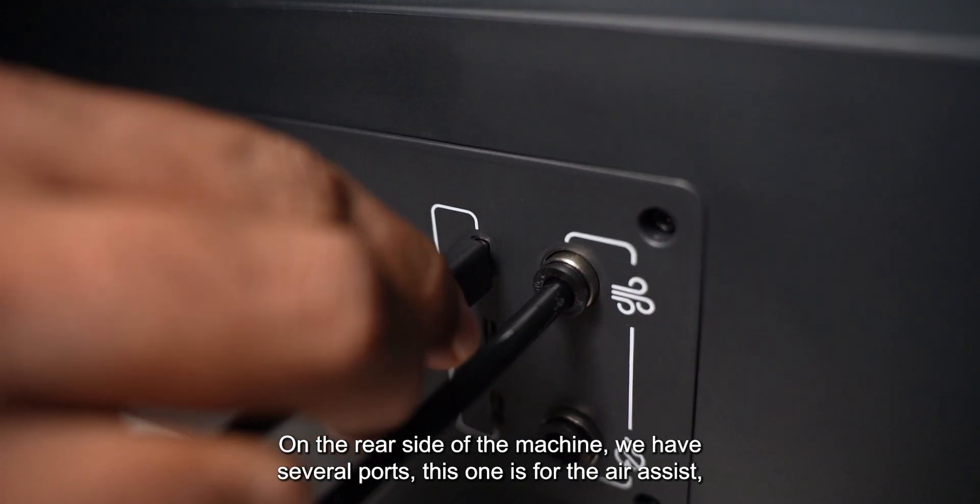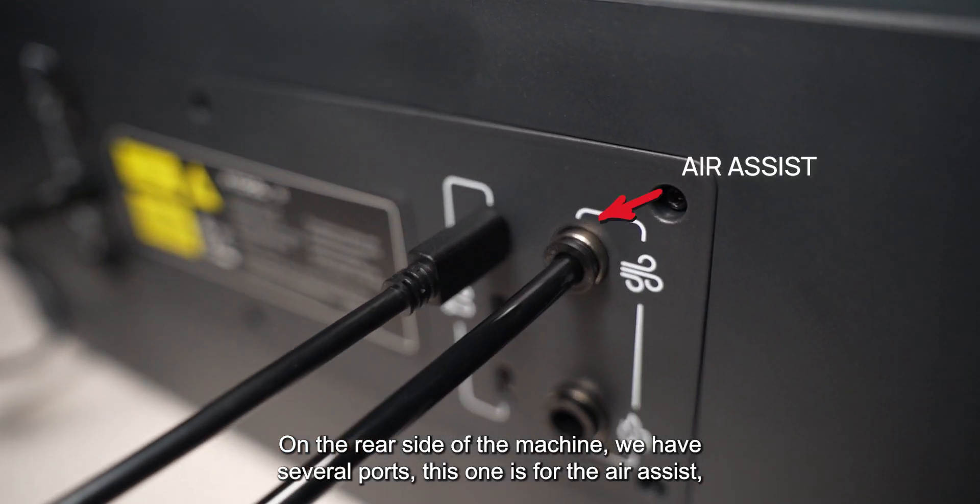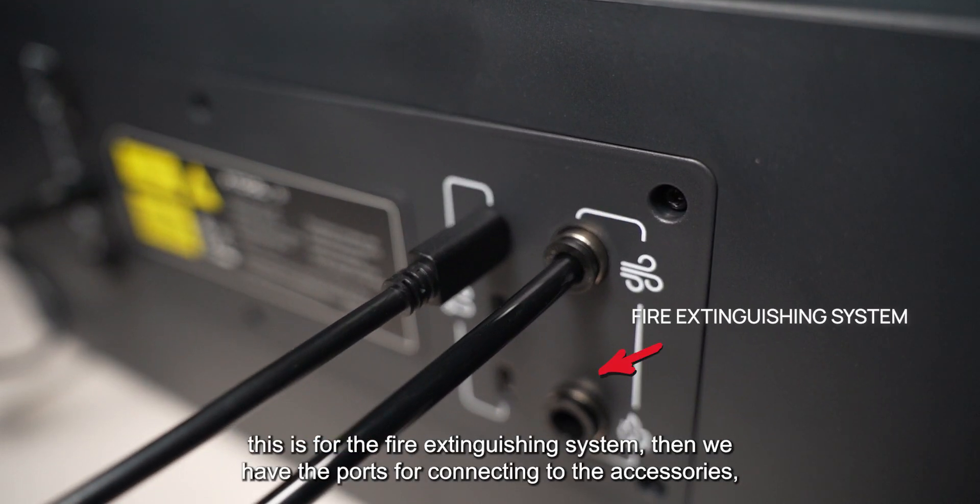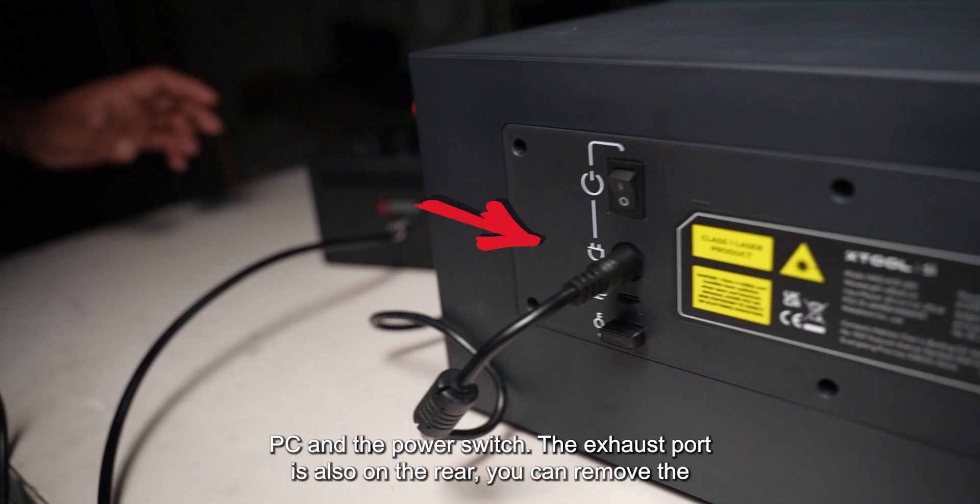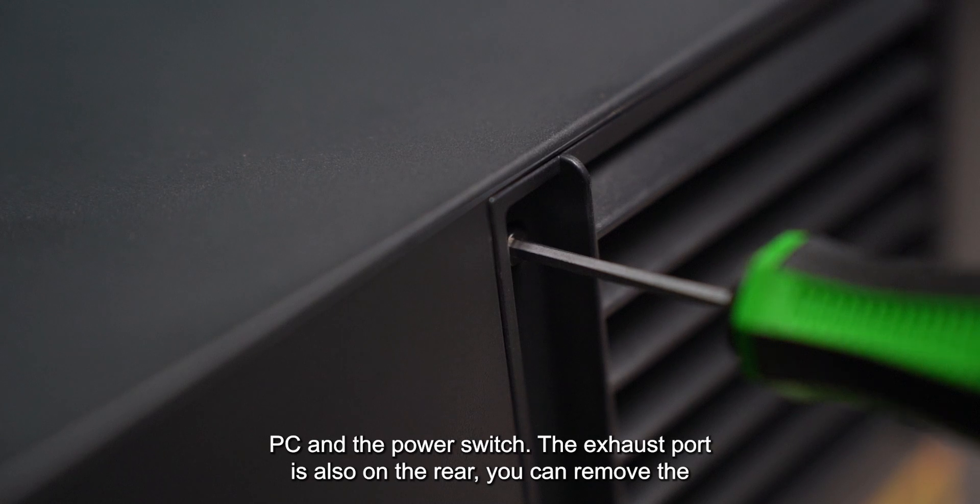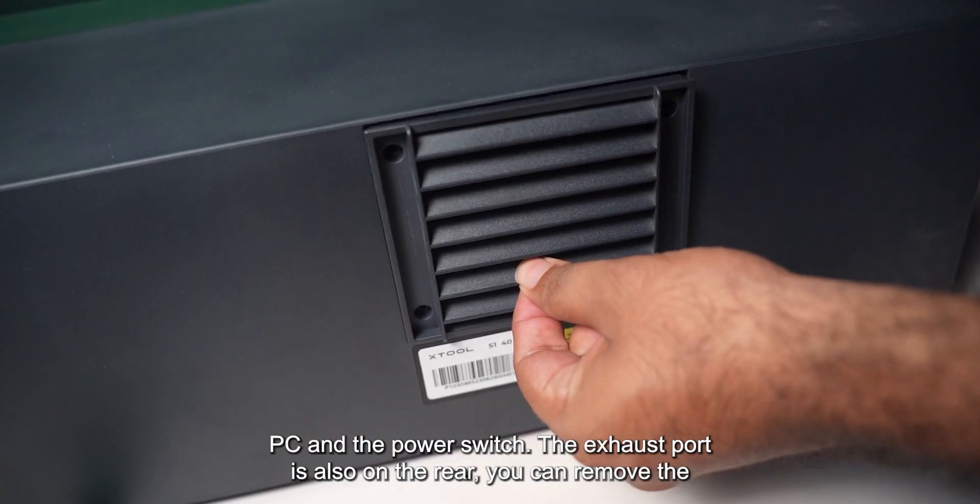On the rear side of the machine, we have several ports. This one is for the air assist. This is for the fire extinguishing system. Then we have the ports for connecting to the accessories, PC and the power switch. The exhaust port is also on the rear. You can remove the vent and connect an exhaust pipe here.